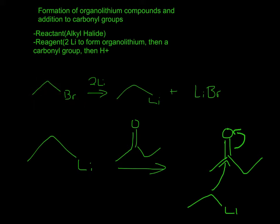So we have two carbons and a bromine, and when you have your two lithiums, one of the lithiums will replace the bromine, and then the other lithium will bind to the bromine, so you'll have LiBr.